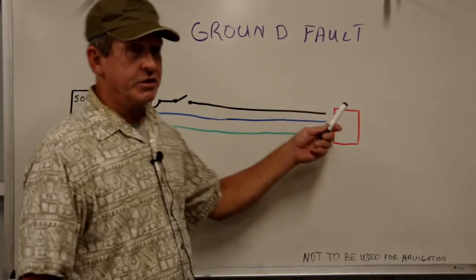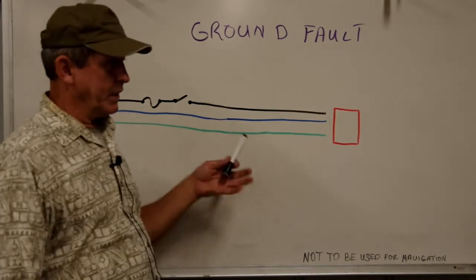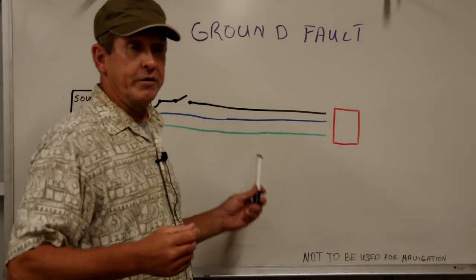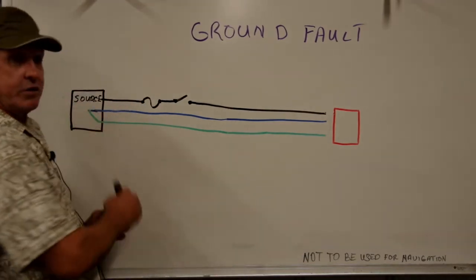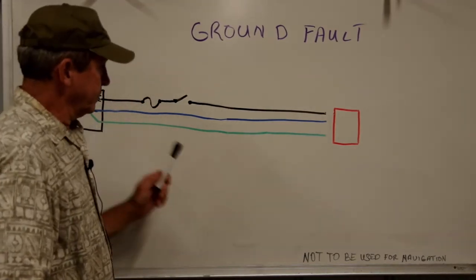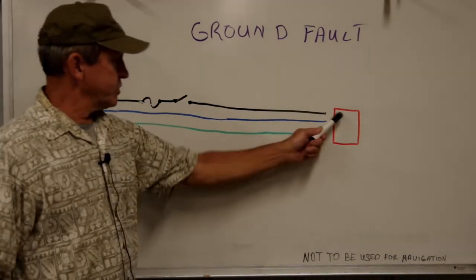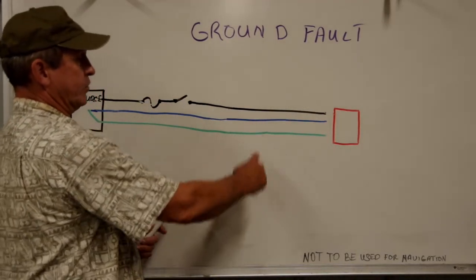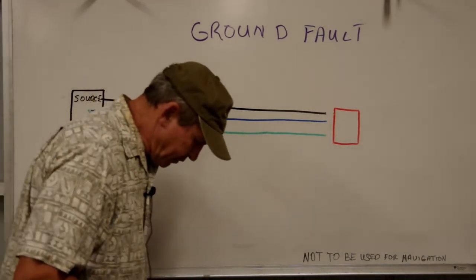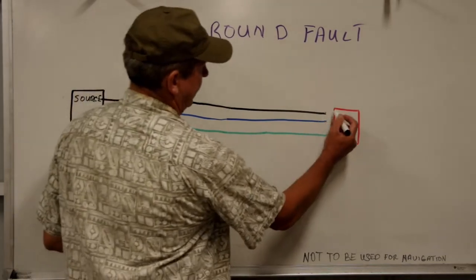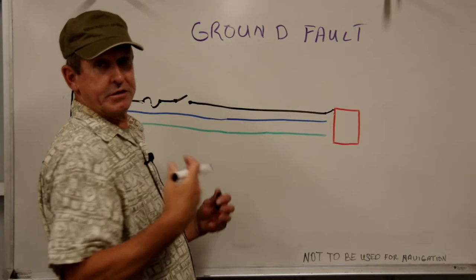I've drawn a simple AC circuit — let's call this our 120-volt AC circuit. We have a source of power, our appliance, circuit protection, a switch, a line, a neutral, and an AC safety ground. If our line happened to come in contact with the case or chassis of this appliance, our line has shorted to the chassis of our appliance.